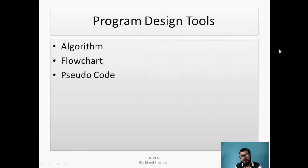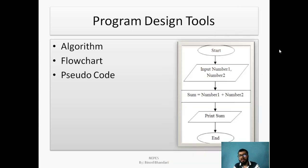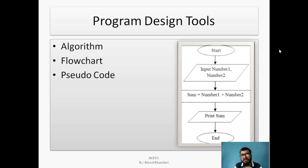A flowchart is the pictorial representation of a program. For the same example — finding the addition of two numbers — input number one and number two (variables A and B), calculate sum equal to number one plus number two, then print sum. Note: start and end are written in ovals, input and output inside parallelograms, and calculations inside rectangles.